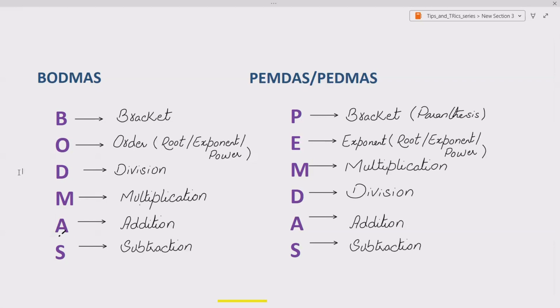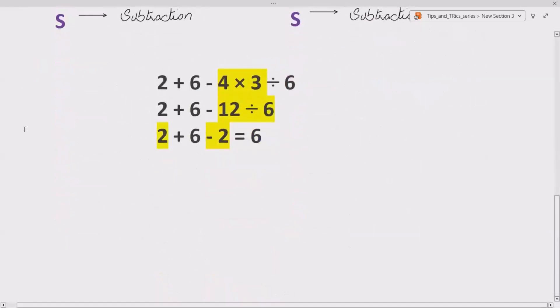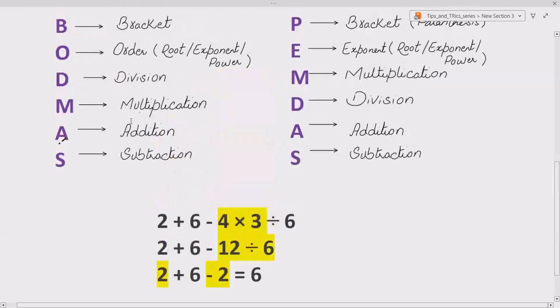Now let's see how we can solve our question. Since we have 2 plus 6 minus 4 multiply by 3 divided by 6, now there is no bracket and exponents so we don't need to worry about them. Then we have division in the BODMAS and multiplication in PEMDAS.